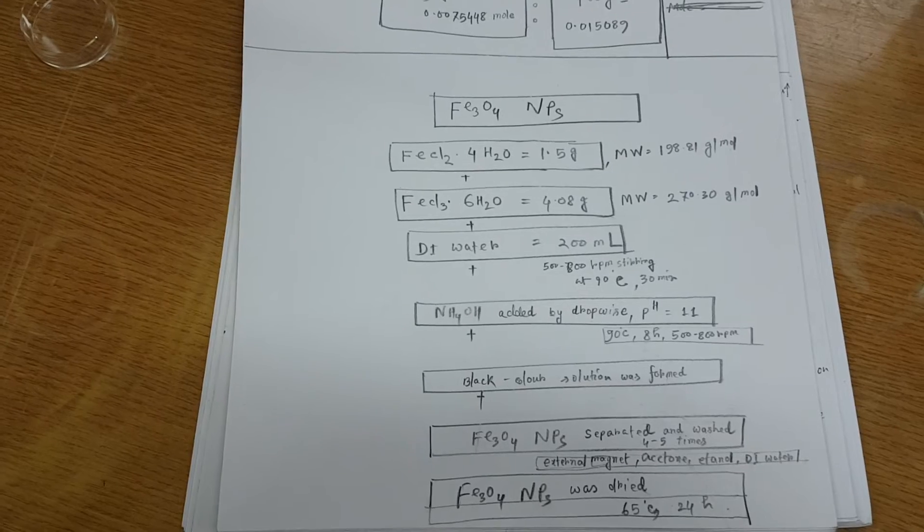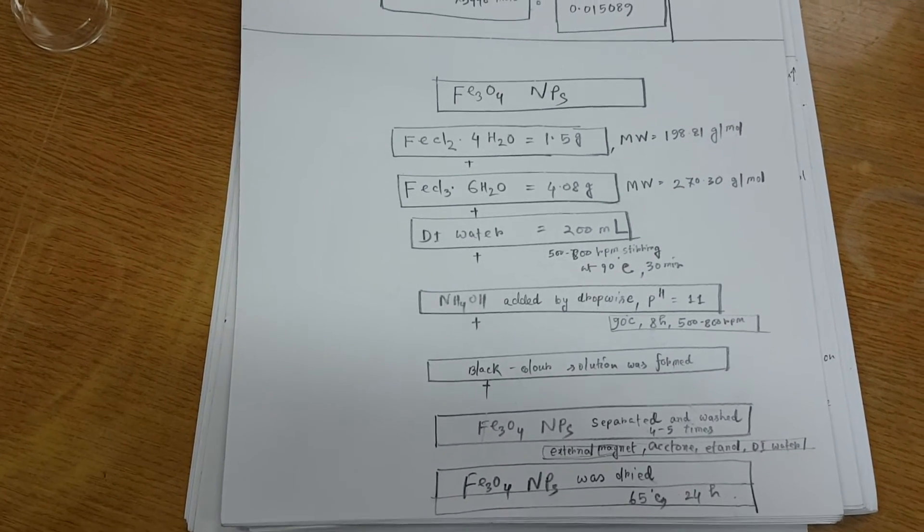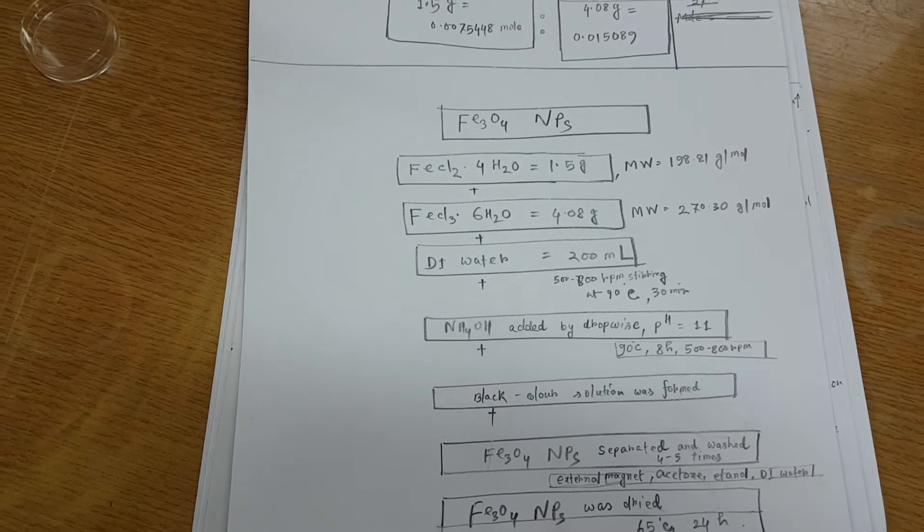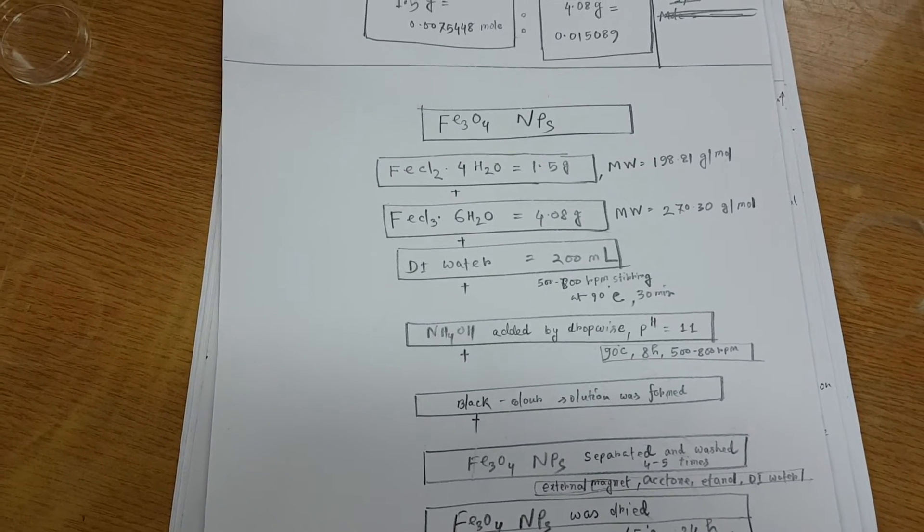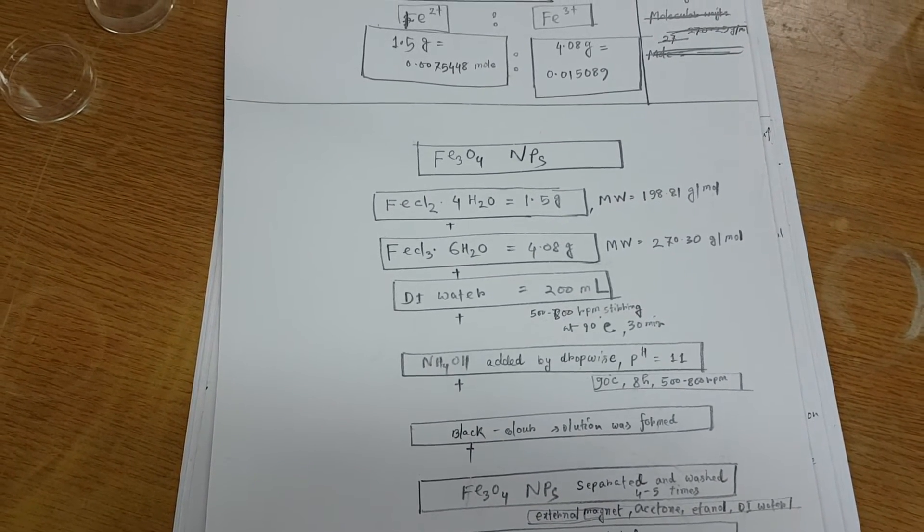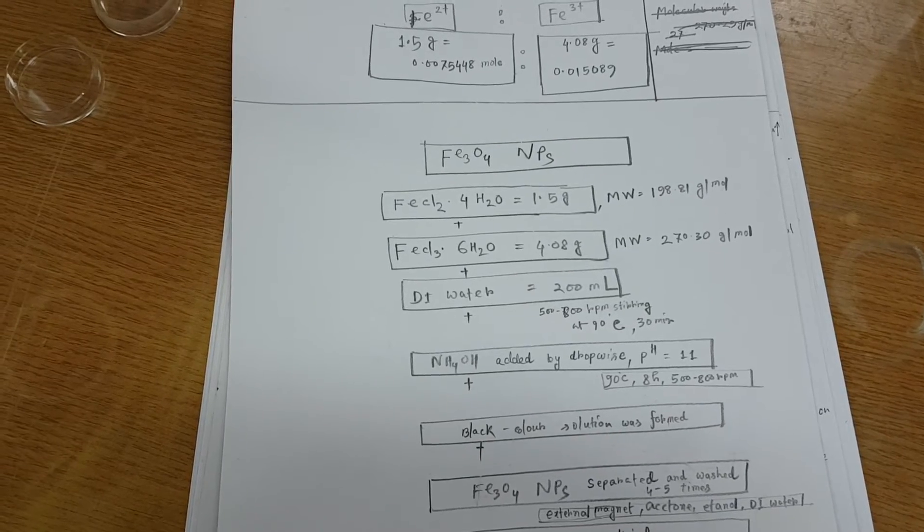And then I add 200 ml DI water for the homogenous mixture. Temperature, I set by 90 degrees Celsius for 30 minutes.